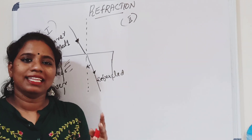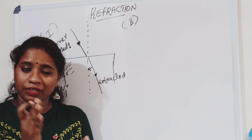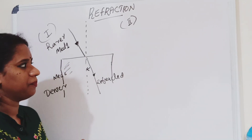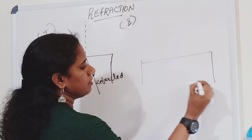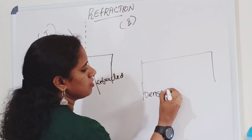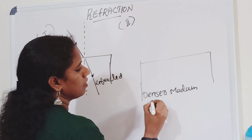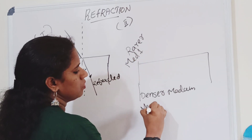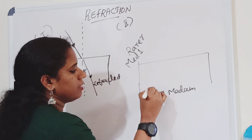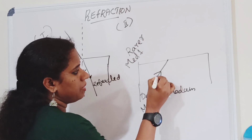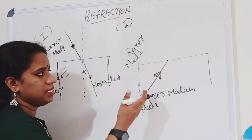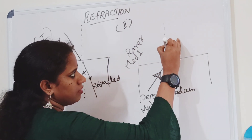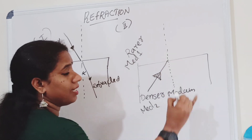For the second rule: this one is our rarer medium on the other side. The incident ray is traveling from the denser medium to the rarer medium, and there is an imaginary line — the normal.